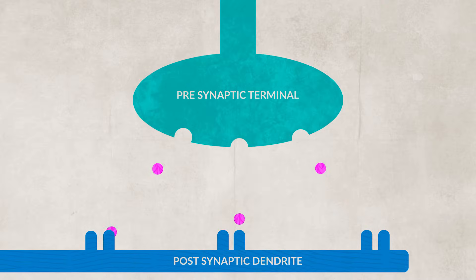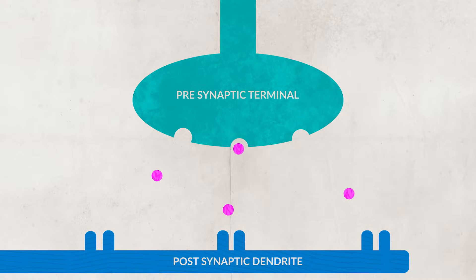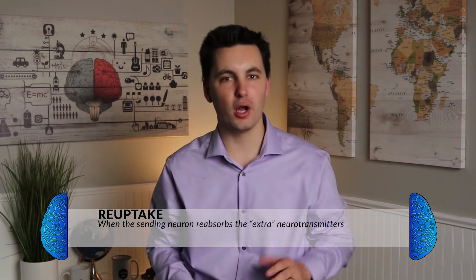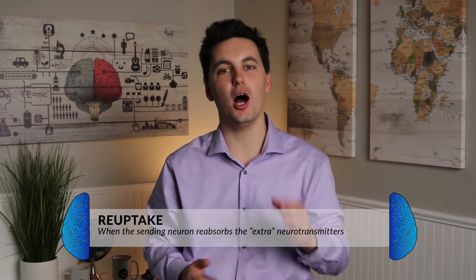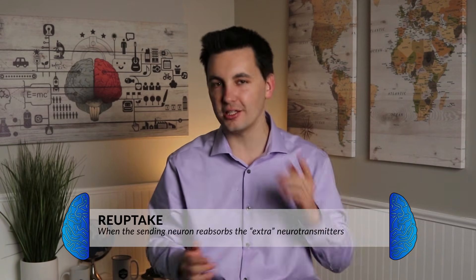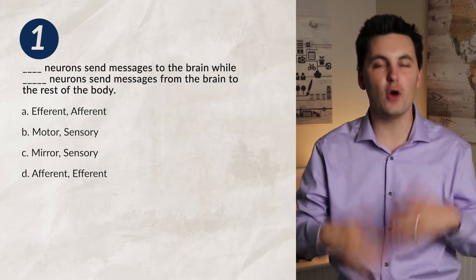This process of taking excess neurotransmitters left in the synaptic gap is known as reuptake — when the sending neuron at the presynaptic terminal reabsorbs the extra neurotransmitters. In our next video, we'll be talking more about the release and reabsorption of neurotransmitters, as this is where many legal and illegal drugs exploit. When exciting or inhibiting the production, release, and reuptake of neurotransmitters, drugs can elicit different effects on our body.